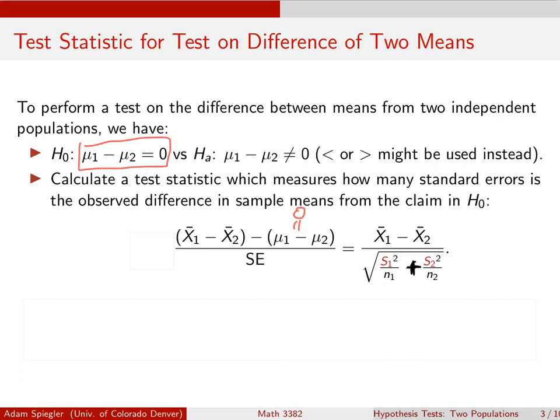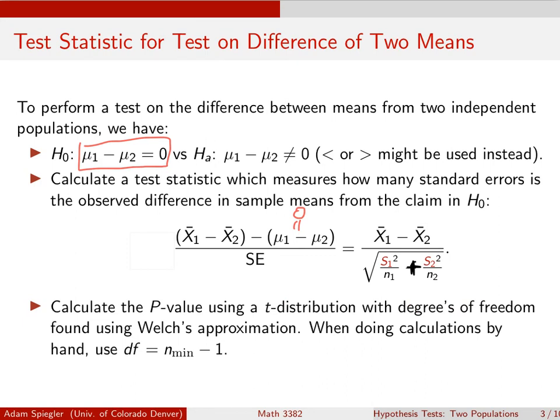We're just going to scale that difference relative to the differences that we should expect from sampling just due to the randomness of the sampling process. Then we're going to calculate the p-value. Because we have used the standard deviations from the samples rather than the population standard deviations, which we don't know, this means that the underlying distribution is better approximated by a T distribution as opposed to a normal distribution. So we would call this a T test statistic.